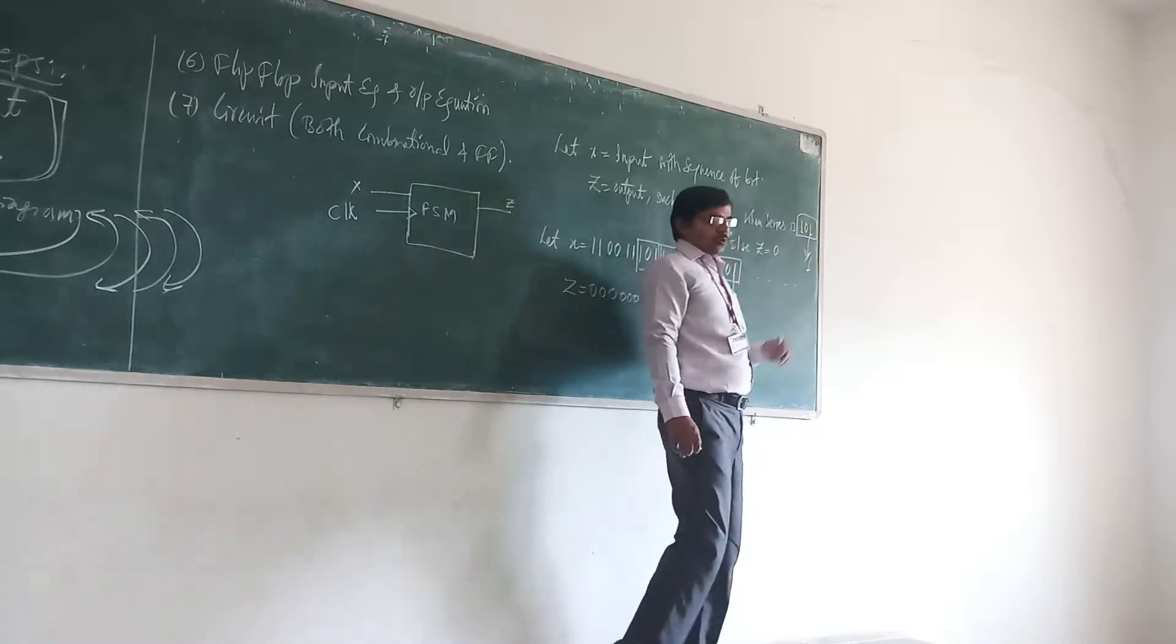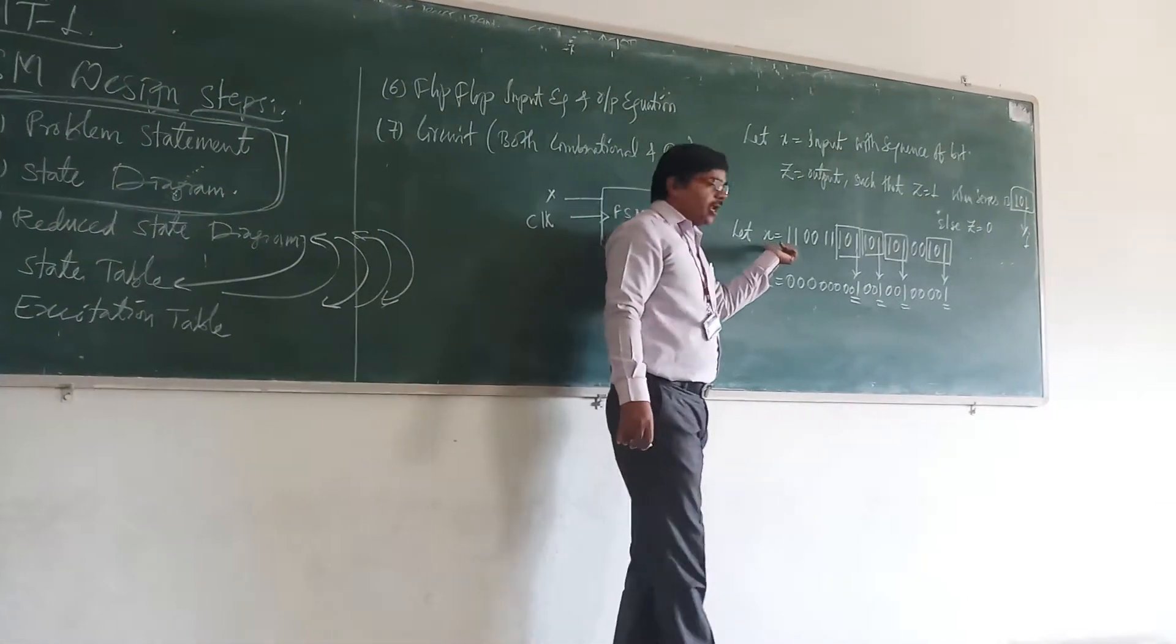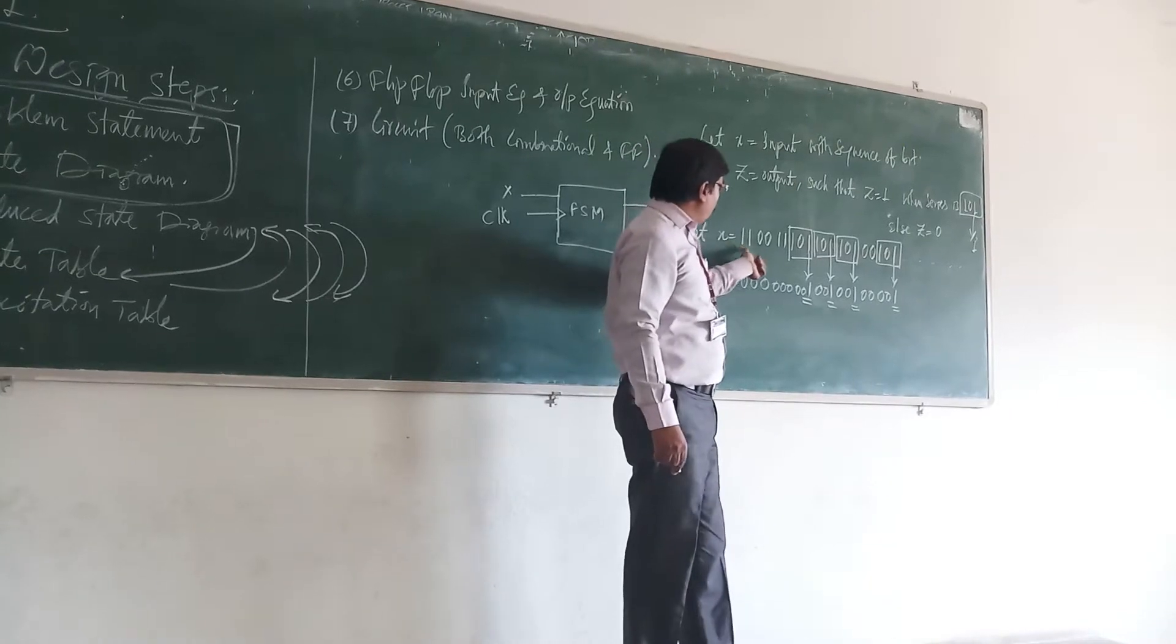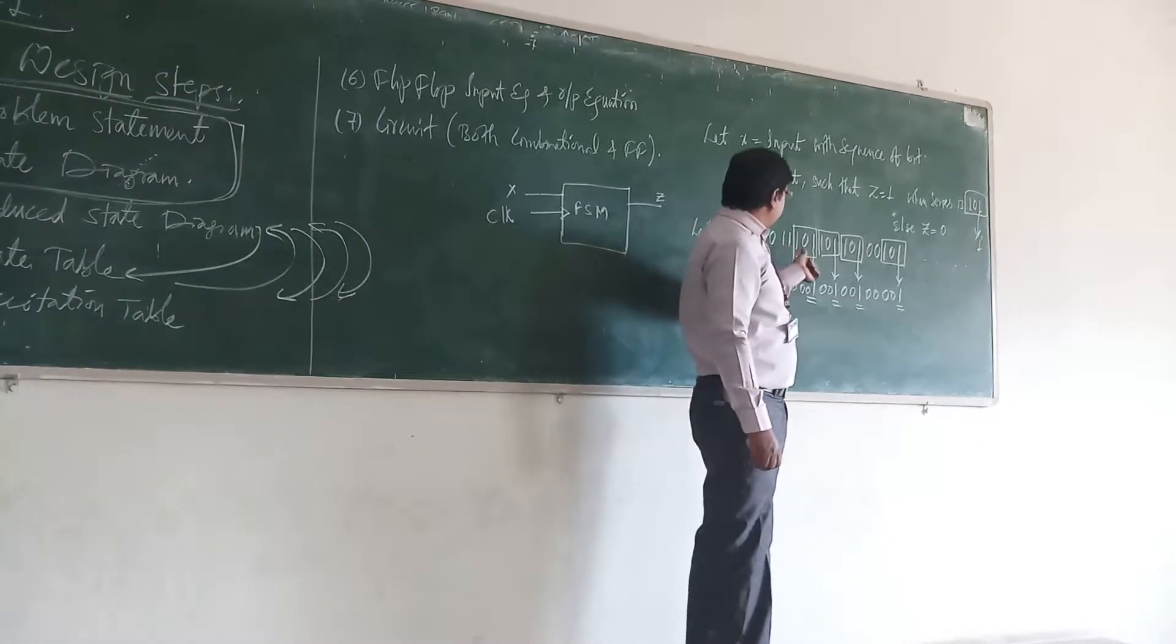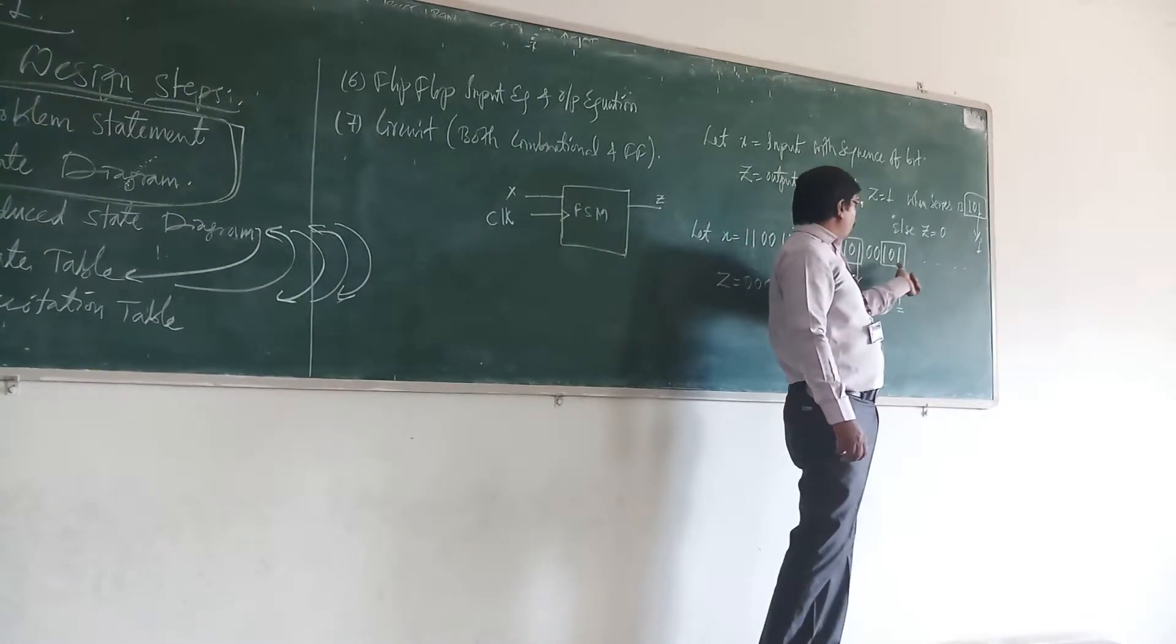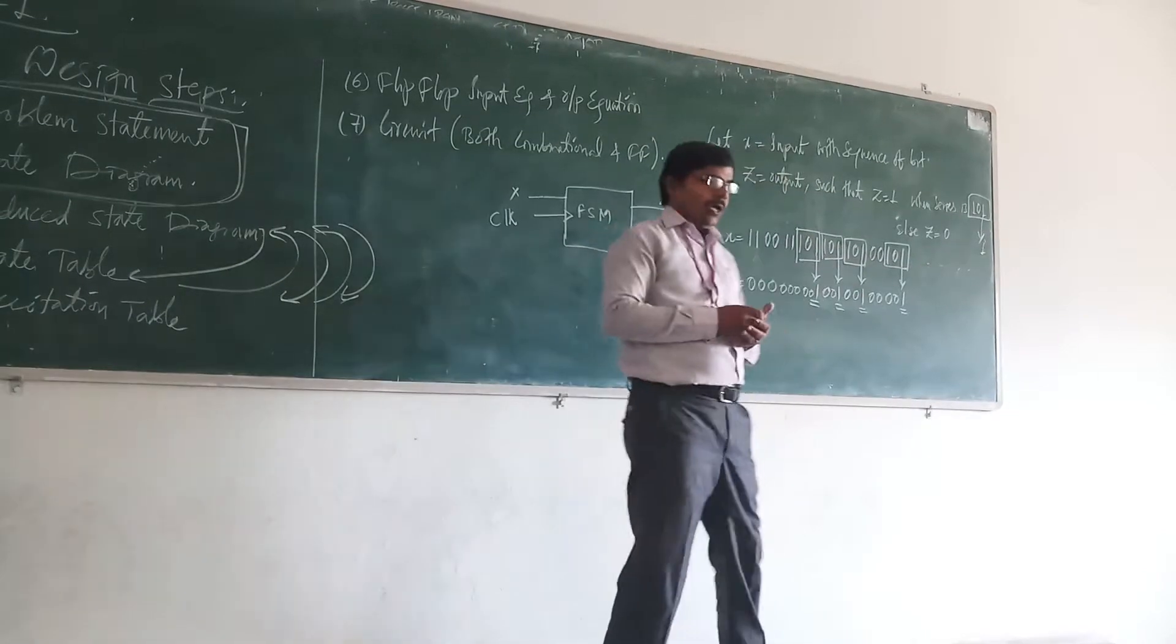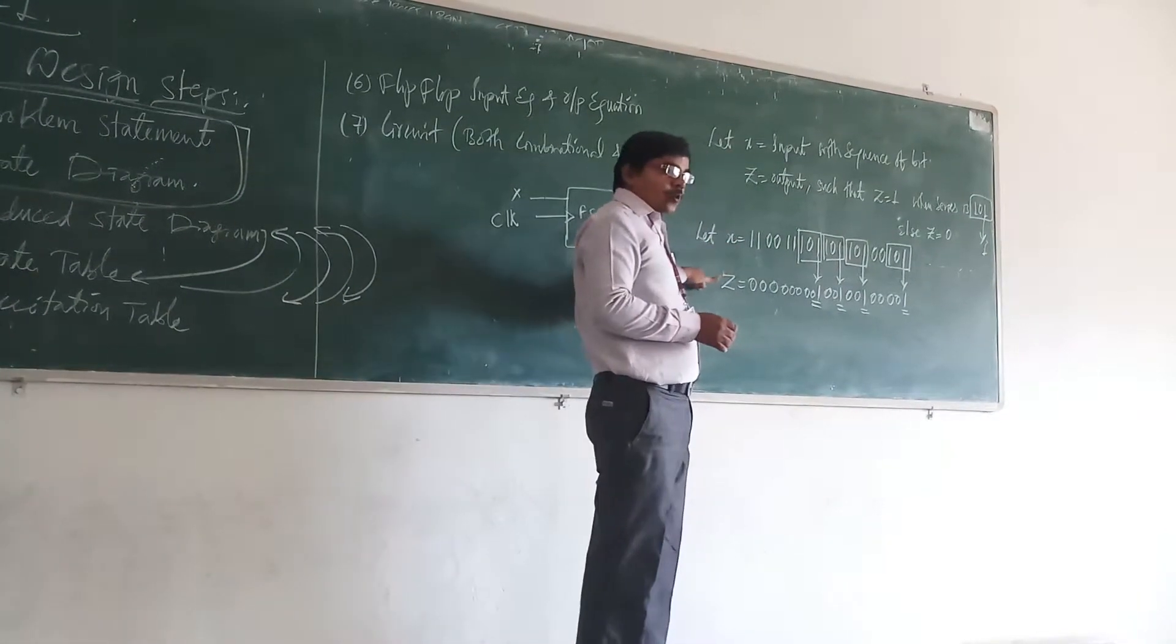So here I have taken an example. Here let your x be 1 1, 0 0, 1 1, then 1 0 1, 1 0 1, 0 0 1, something like this. One series. So what will be the output of this one?